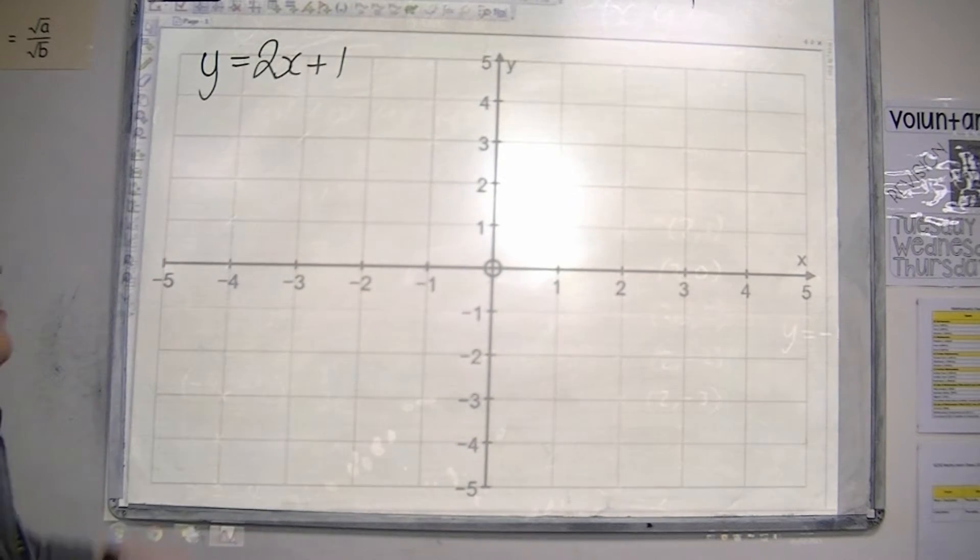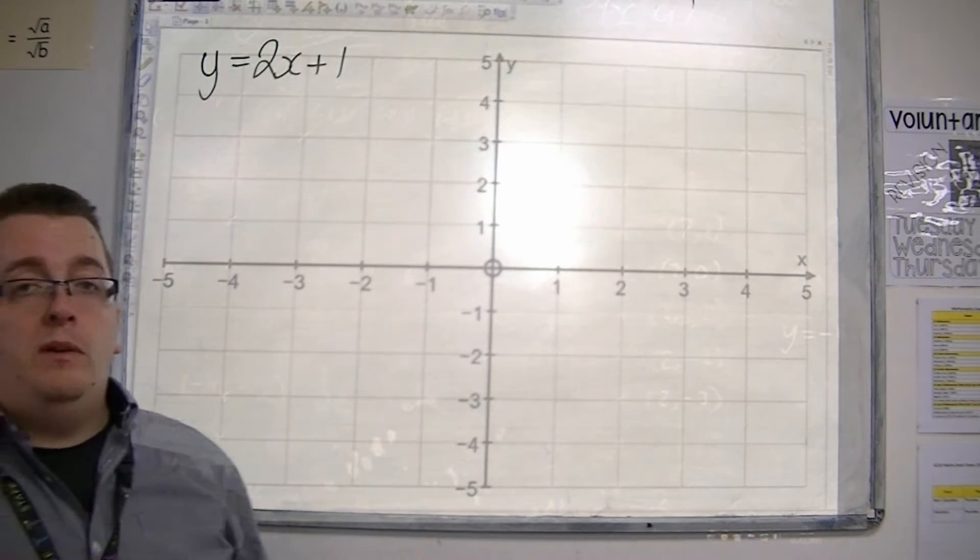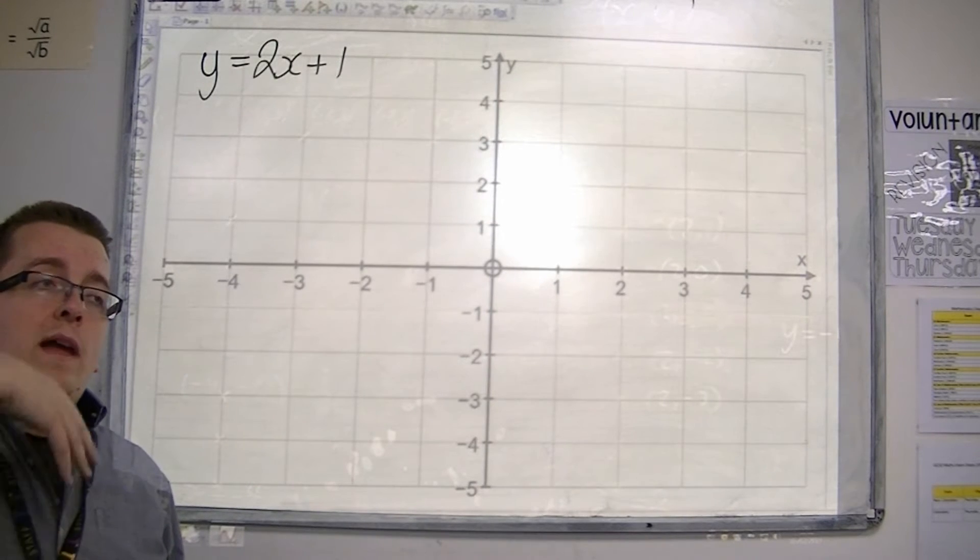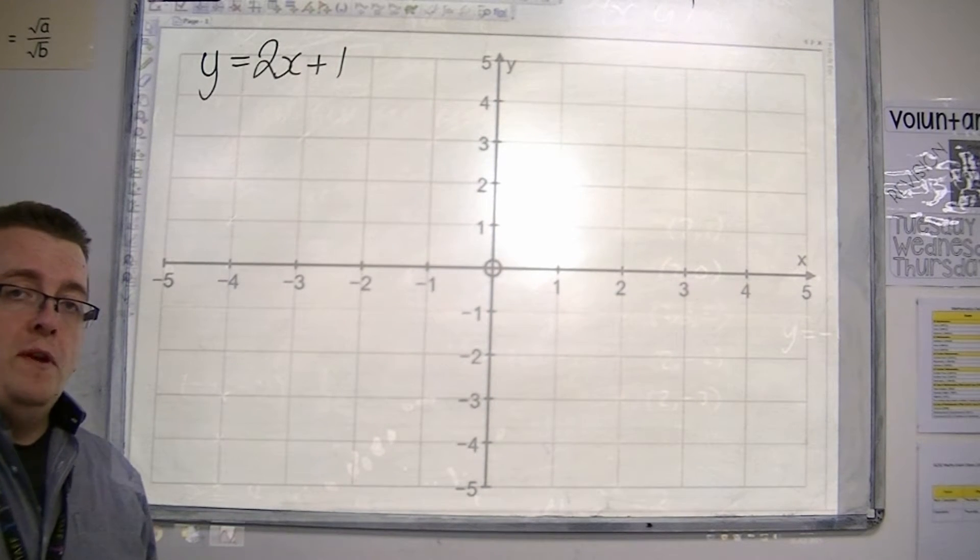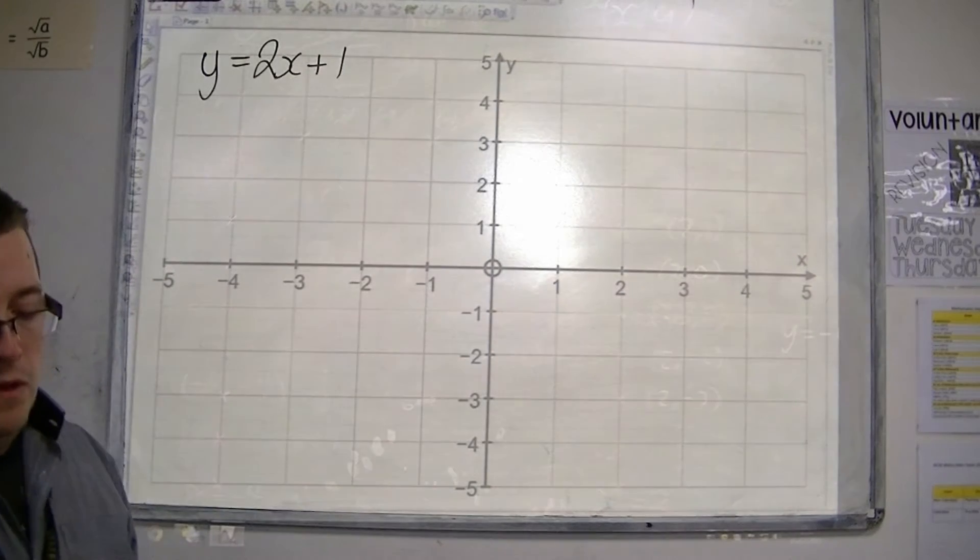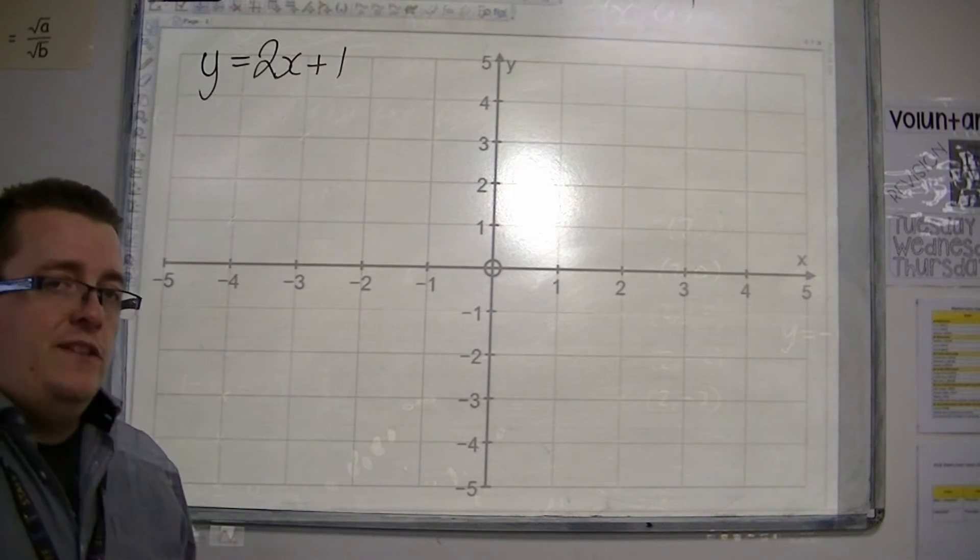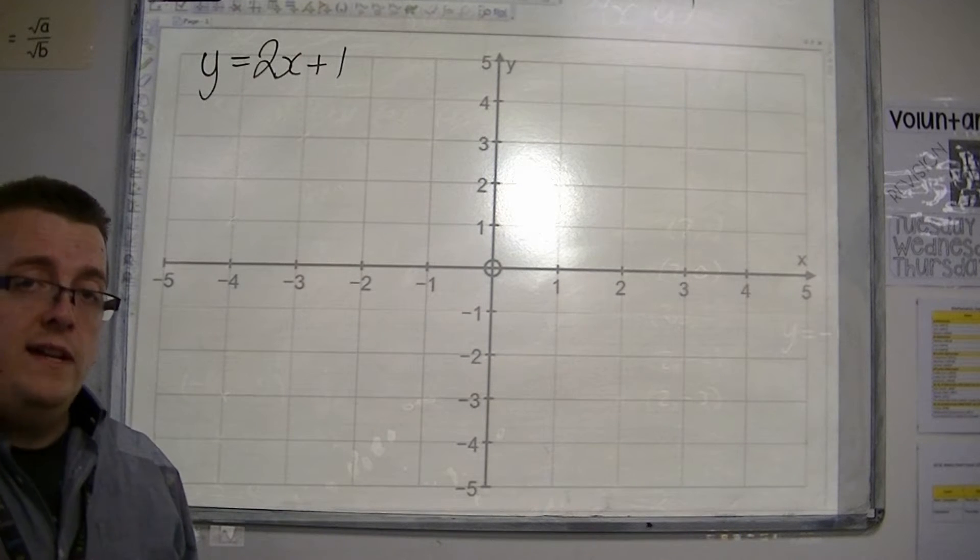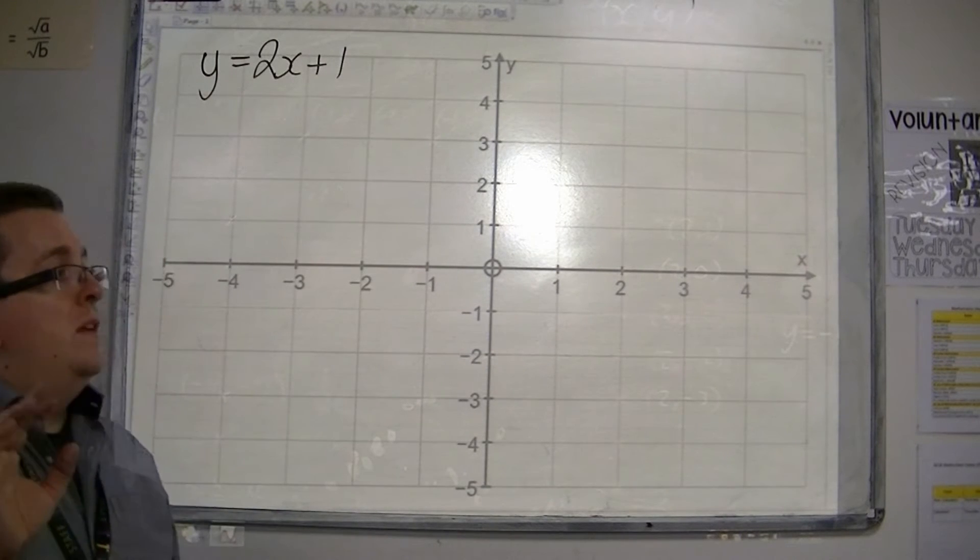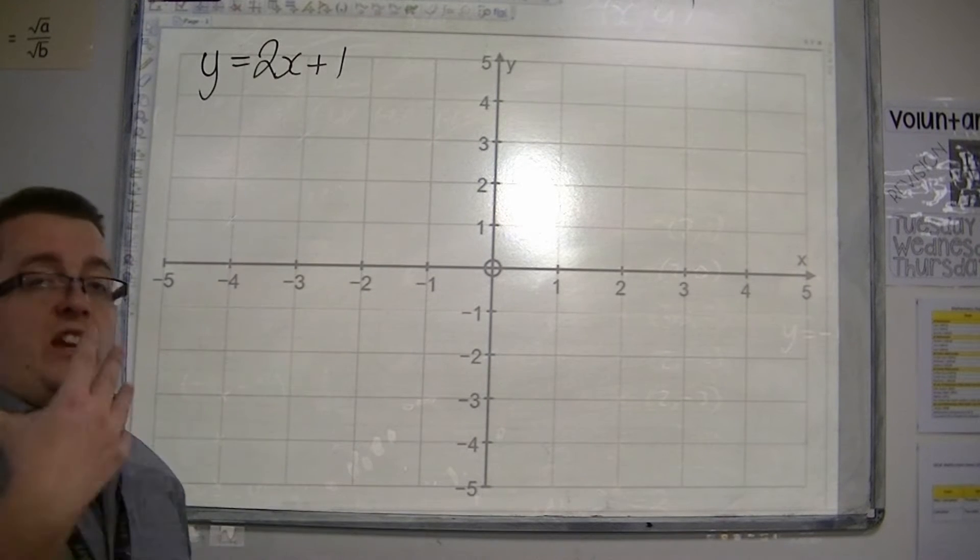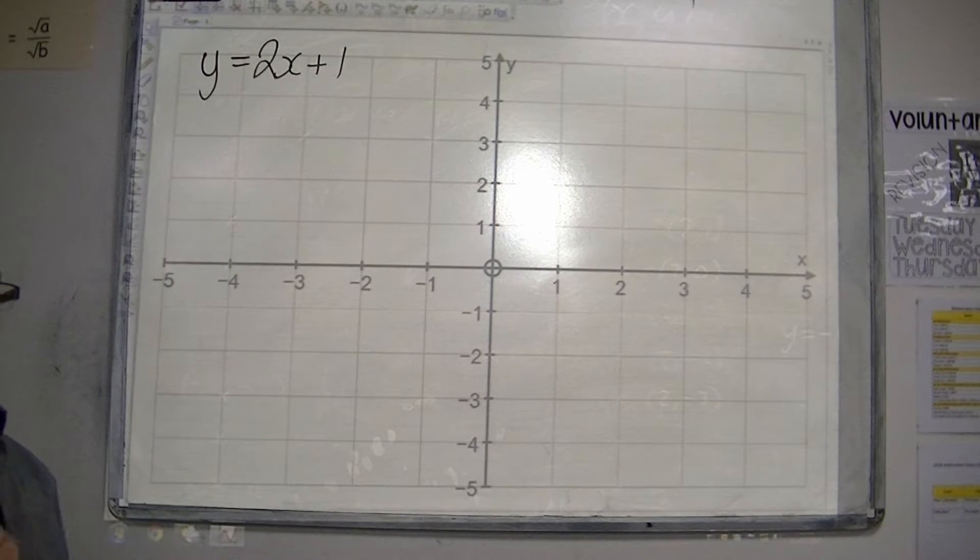One of these, an example of that, is y equals 2x plus 1. This is an example of a line where we need to be able to draw it, and we also need to be able to identify it. So more likely this is going to be a case of, can you identify the equation from the line? But to introduce it, I'm going to show you how you draw it first.